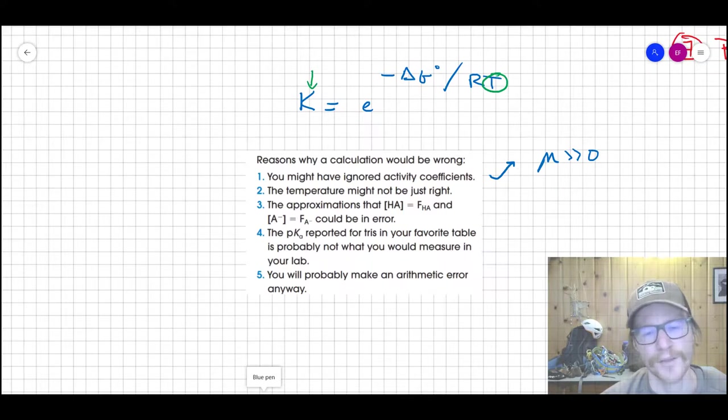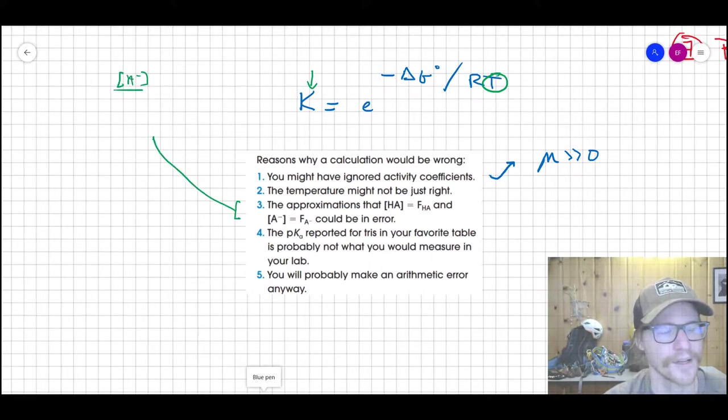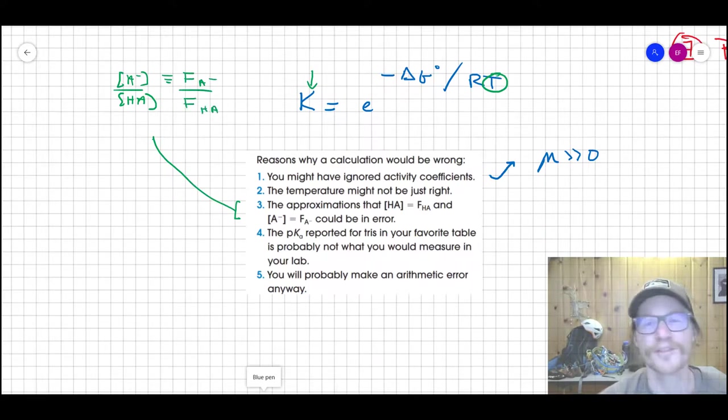Third one here is that it says the approximations that HA equals FHA and A- equals FA- could be an error, and likely are an error. And this is the one that I've alluded to several times. And that's when you go through your Henderson-Hasselbalch equation, you get this ratio of A- over HA and you say, okay, the concentrations that I compute for each of those, I'm just going to mix them together and it's good. That's the assumption. So that would be the formal concentration of A-. And this would be the formal concentration of HA because those are the things we're adding into the solution, but we're not assuming they're the true concentrations because these things are going to reequilibrate somewhat.